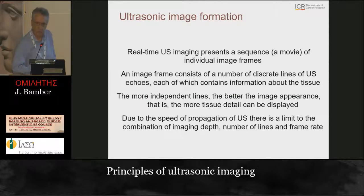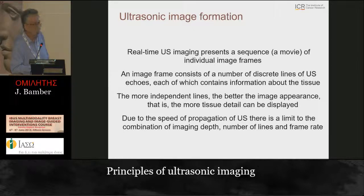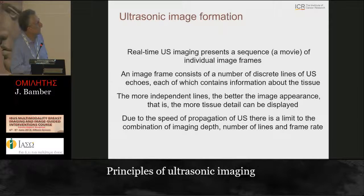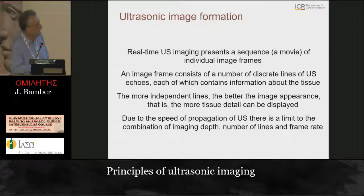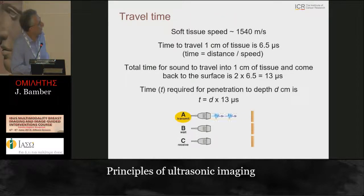How do we form ultrasound images? Real-time ultrasound imaging presents on the screen as a sequence or movie of individual image frames. One image frame consists of a number of discrete image lines, each containing the ultrasound echoes that display the tissue anatomy. The more independent lines, the better the image appearance and the more tissue detail can be displayed.